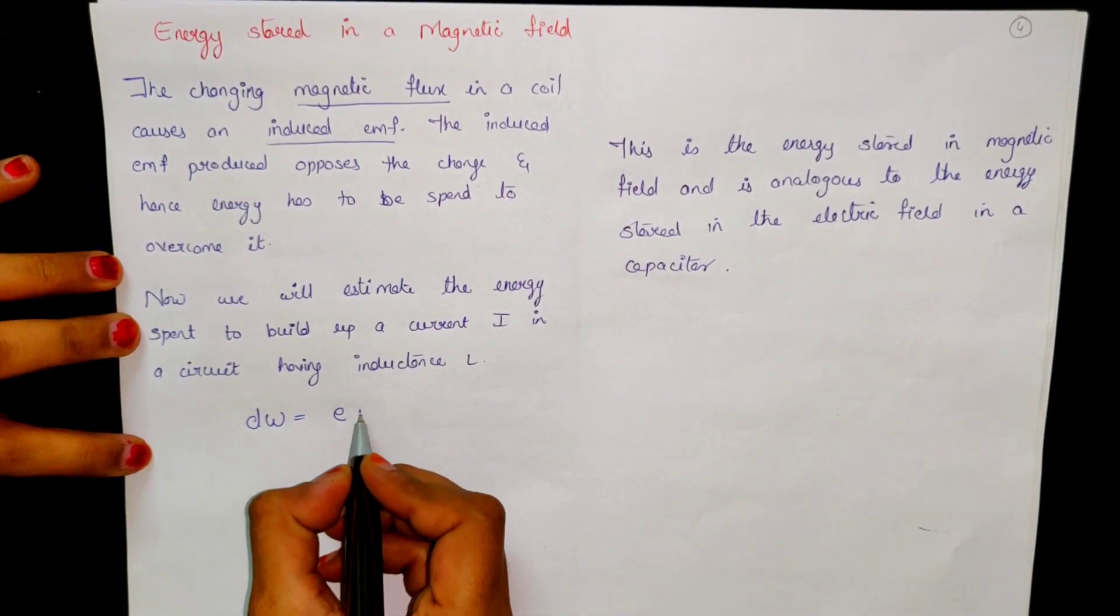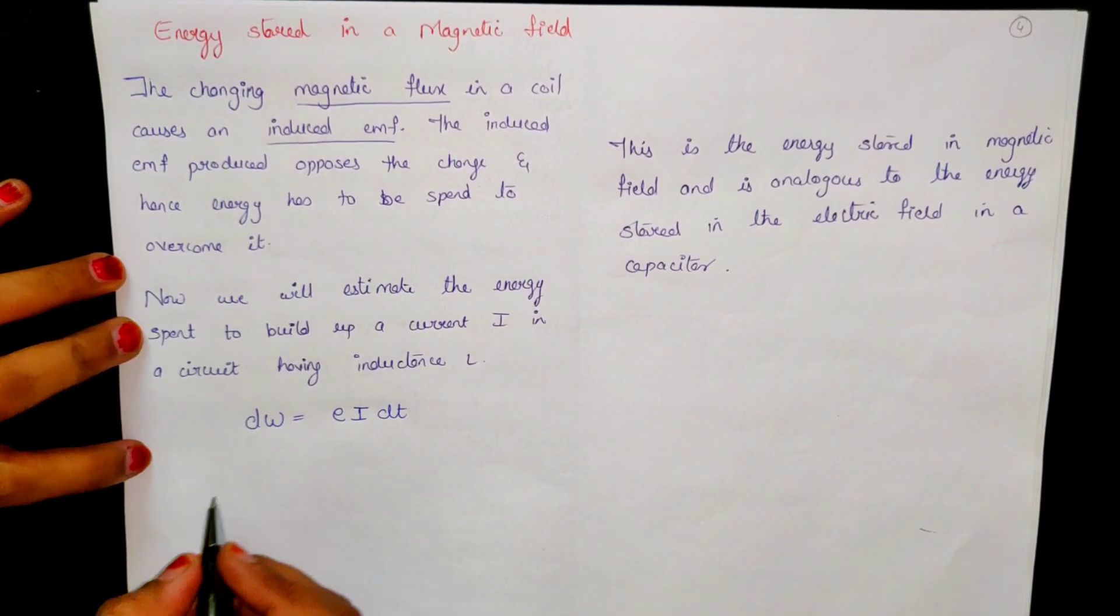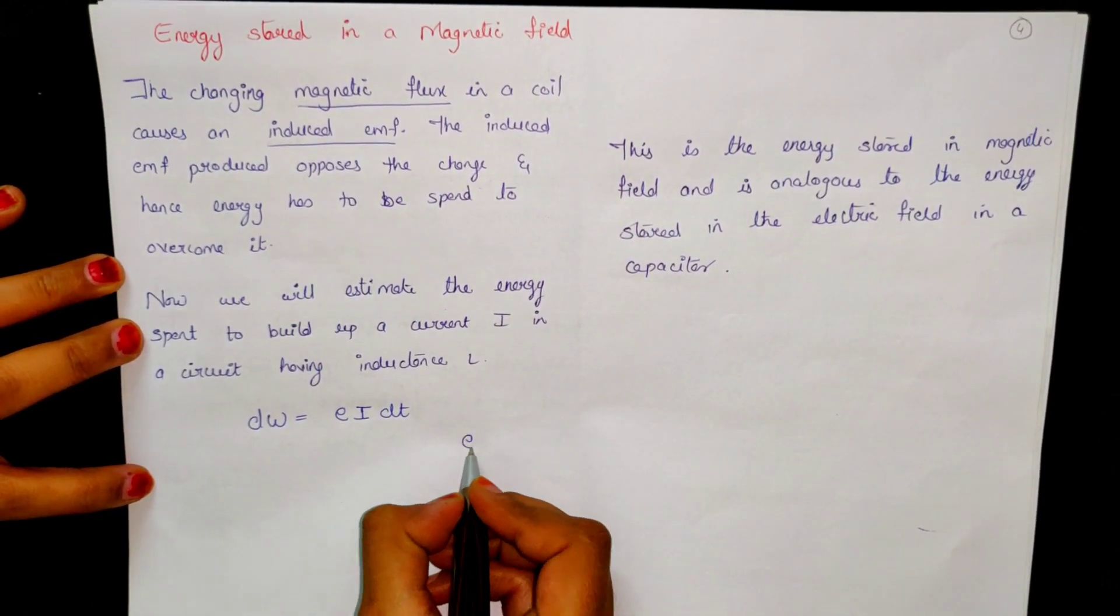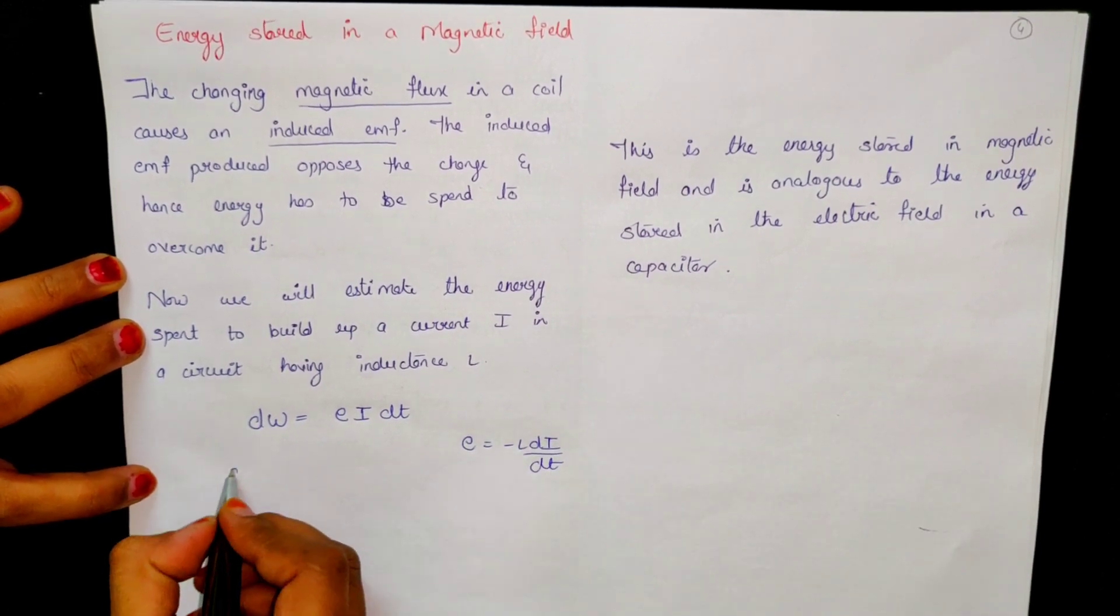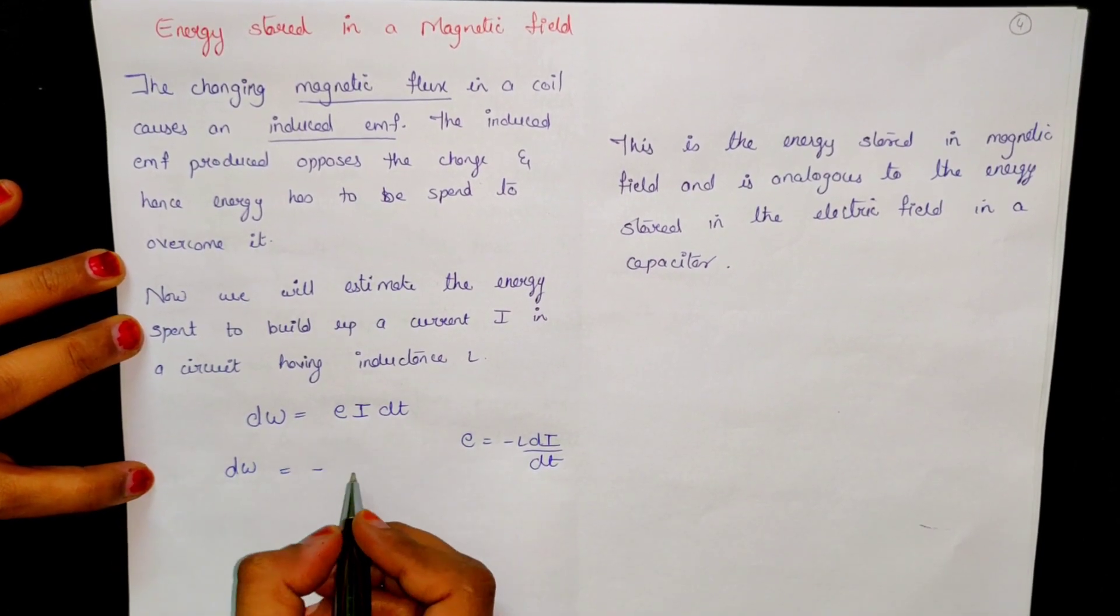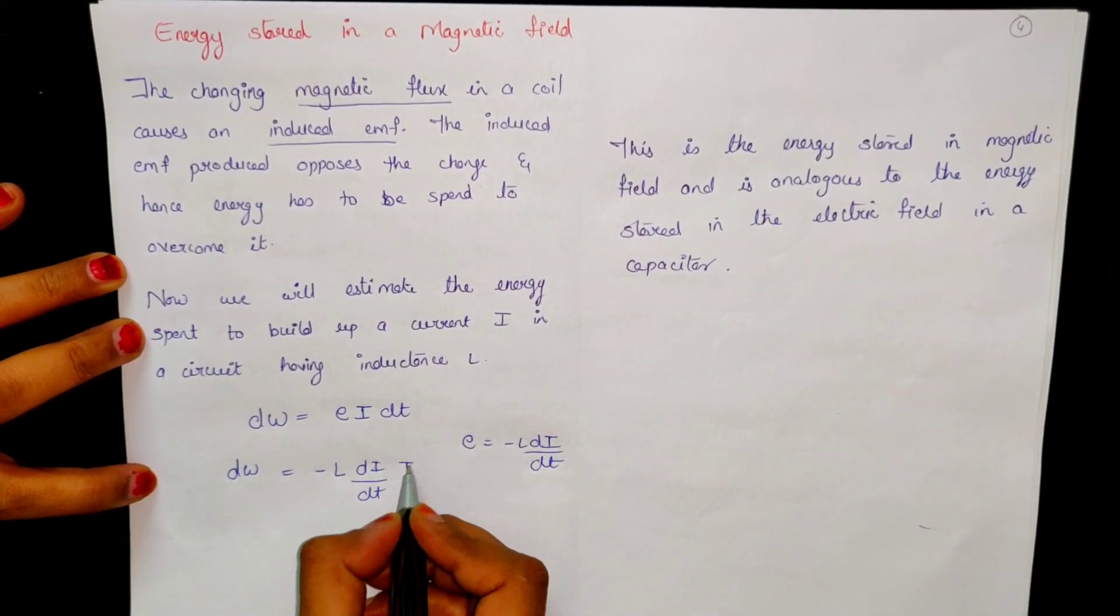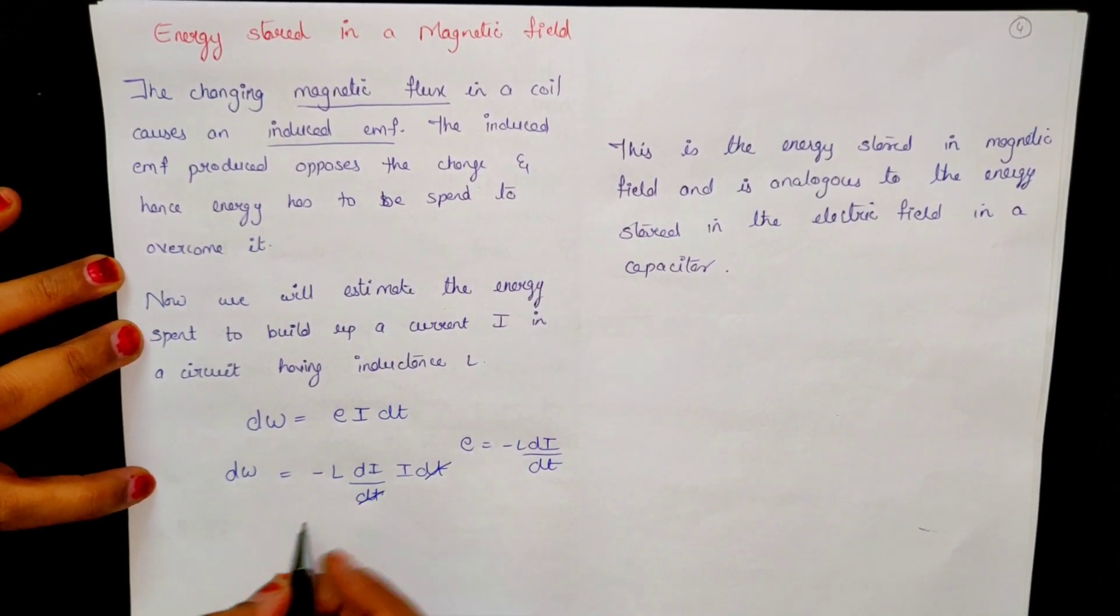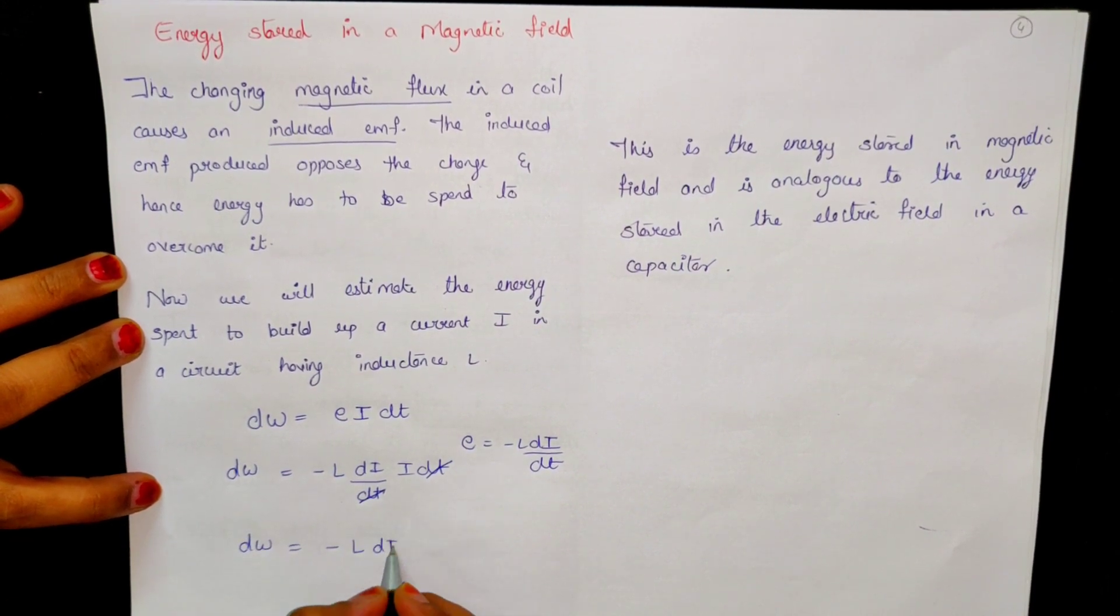So dW is E into i dt. I will substitute in the place of E, minus L di by dt. So dW is minus L di by dt, and here it is i dt. This is dt dt cut. So dW is minus L i di.